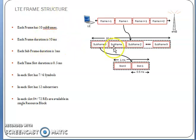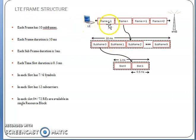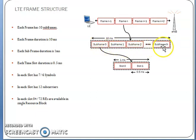LTE frame structure: one frame is divided into 10 subframes. One frame is equal to 10 milliseconds. One frame is divided into subframe 0, subframe 1, subframe 2, up to subframe 9. One subframe is equal to 1 millisecond. One subframe is divided into two slots: slot 0 and slot 1.